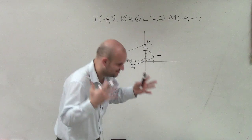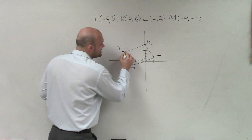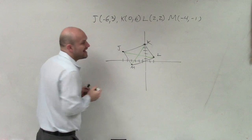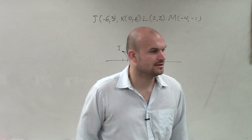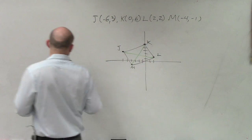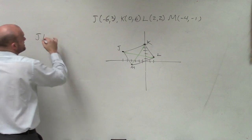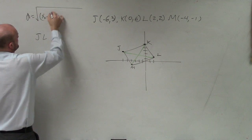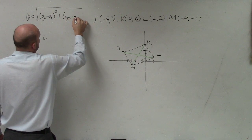The diagonals. So that means if I can show that that diagonal is equal to that diagonal, have I just proven that it is a rectangle? Yes. So what we're going to do is we're going to find the distance of JL. Remember, the distance formula looks like this: the square root of (x₂ minus x₁) squared plus (y₂ minus y₁) squared.